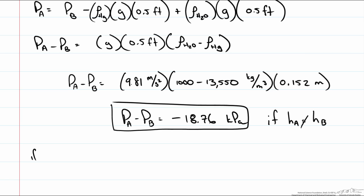For HA equaling HB our pressure differential is going to be equal to gravity times the density of our fluid, in this case mercury is our column fluid, times our column height.